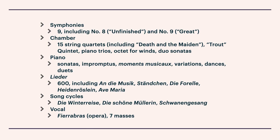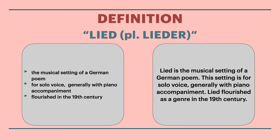And then we come to Lieder, of which there are over 600. So we should talk about what Lieder is. Lied, or the plural Lieder, is quite simple — it's basically just German art song. Here's the full definition: Lied is the musical setting of a German poem for solo voice, generally with piano accompaniment. Lied flourished as a genre in the 19th century.